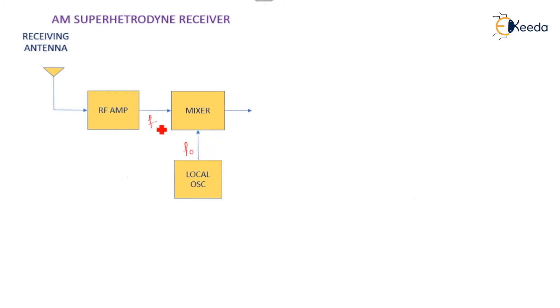And fs is nothing but the signal frequency. So here at the output of the mixer, you will have four different frequency components: fs, f0, f0 plus fs, and f0 minus fs. Out of these four components, the difference frequency component is selected as intermediate frequency.